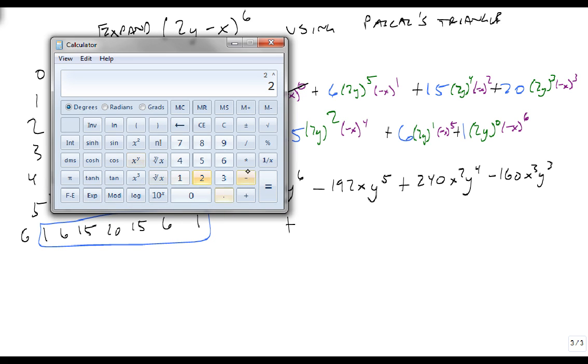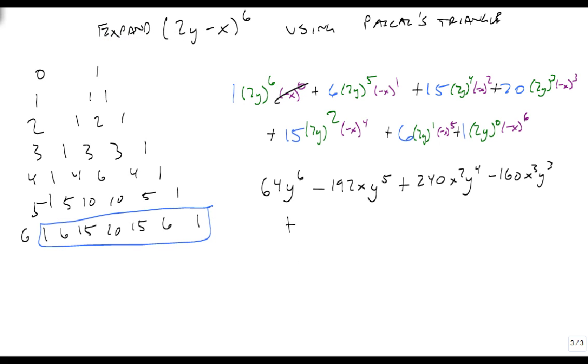Plus 2y squared times 15 is 60x to the fourth y squared, plus, no this is going to be minus because it's a minus x to the fifth, 6 times 2 should be easy, that's just a 12x to the fifth y, plus x to the sixth.